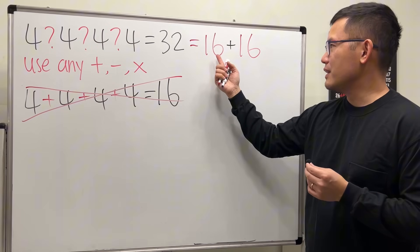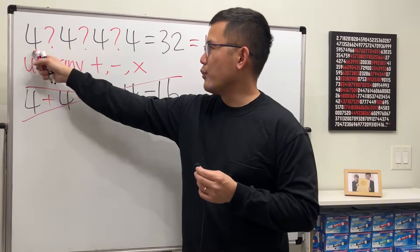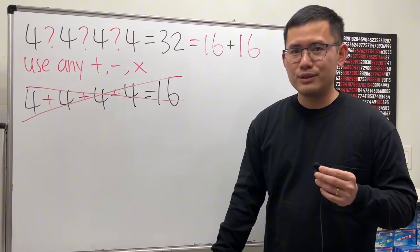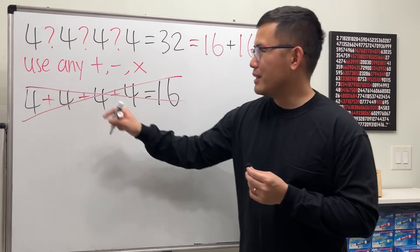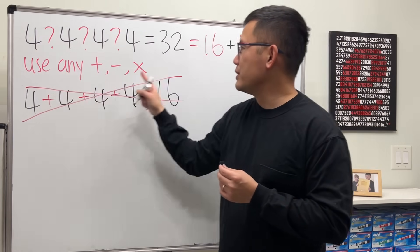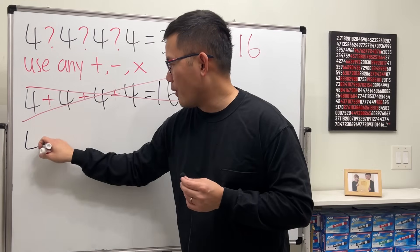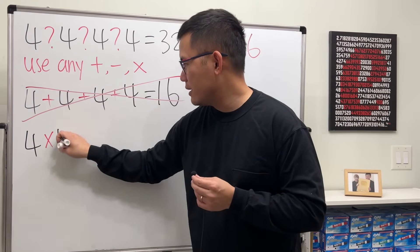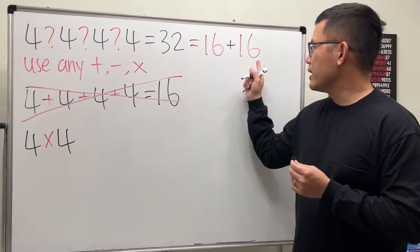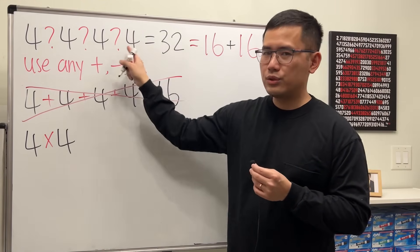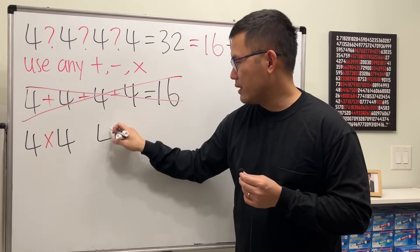Can I get 16 from 4 and 4? Yeah, just multiply them, right? So I can use these two fours to get 16 by doing 4 × 4, and then to get this 16, I can just use these two fours, so 4 × 4.